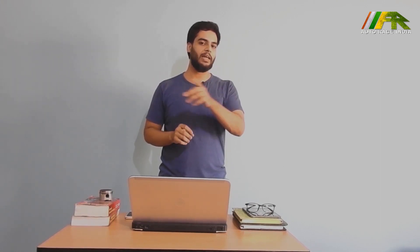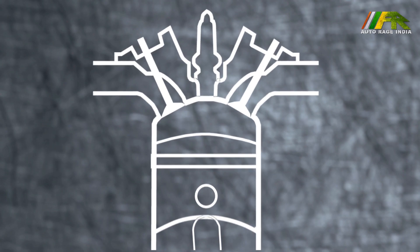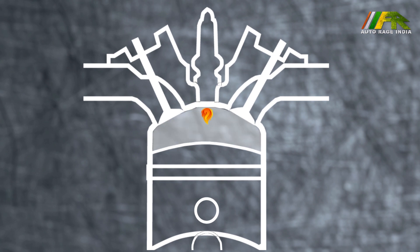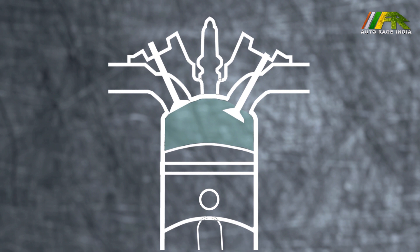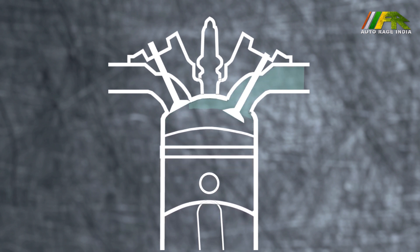Let us assume that the piston is at its top-most position where the fuel and air mixture ignites. Let us recall the metal pot and the firecracker. Similarly, due to ignition, the piston is pushed and in turn it rotates the crank via the connecting rod. Later, when the piston comes up, it pushes the exhaust gases, and at the same time the exhaust valves open, which lets the exhaust fumes go out, and then the exhaust valve closes.